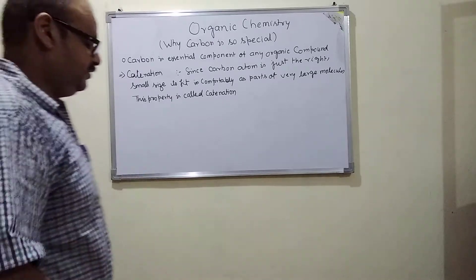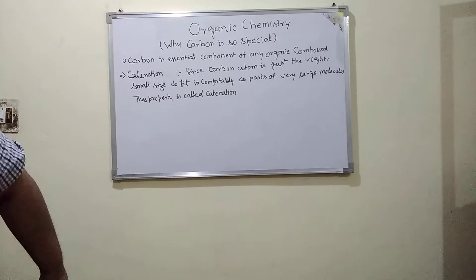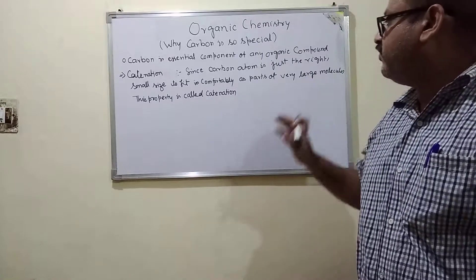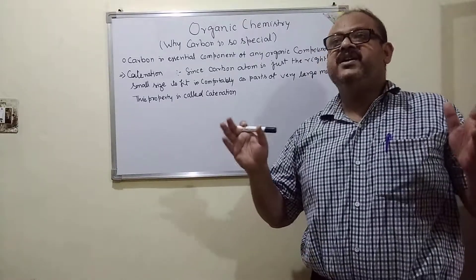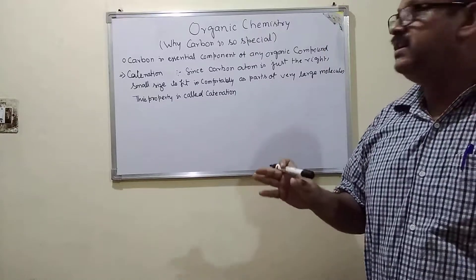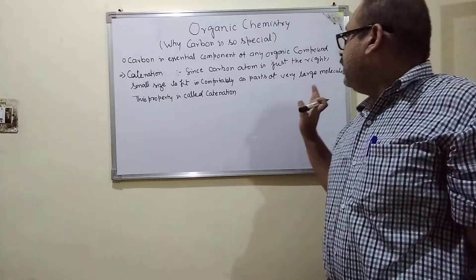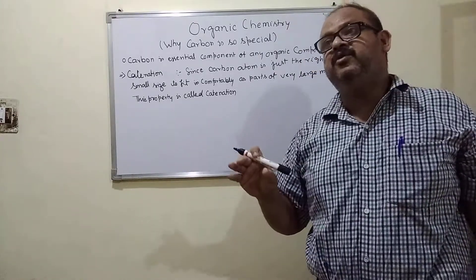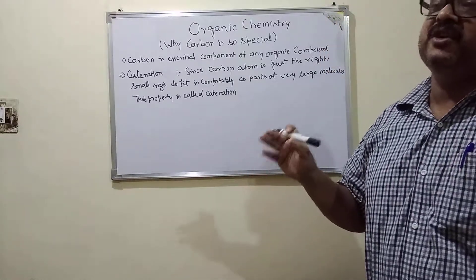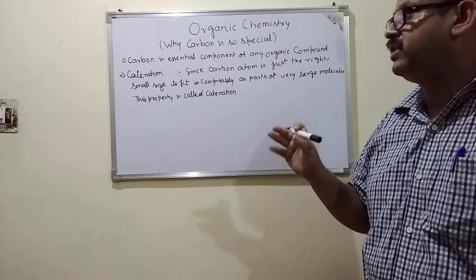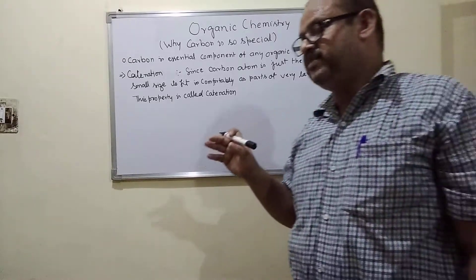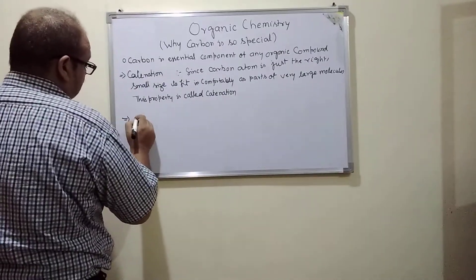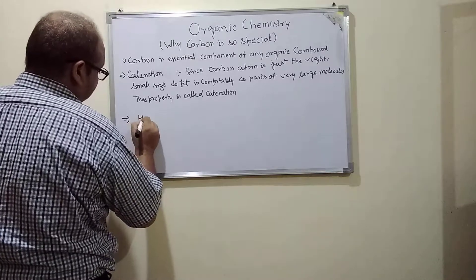The property is Catenation. The size of carbon is very comfortable — it can fit as a part of large molecules. Carbon atoms link to each other to form huge and large molecules, which is why carbon produces such a large number of compounds.